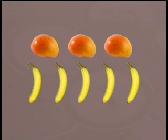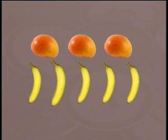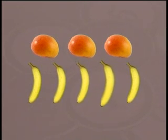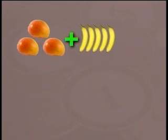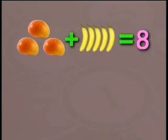And now the bananas. One, two, three, four, and five. Five bananas. So we have three mangoes and five bananas. That will give us a total of three plus five equals eight. There are eight fruits.